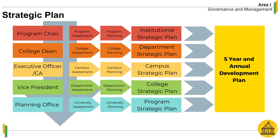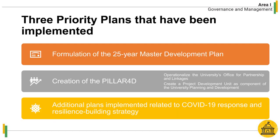PSAU's mission is mainstreaming the science and practice of agroecological and industrial technologies through distinctive instruction, research, extension, and entrepreneurship for people and nature. Three priority plans that have been implemented: first, formulation of the 25-year master development plan; second, creation of the Pillar 4D; and third, additional plans implemented related to COVID-19 response and resilience building strategy.